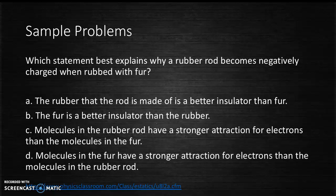For the second problem: which statement best explains why a rubber rod becomes negatively charged when rubbed with fur? The answer is D: molecules in the fur have a stronger attraction for electrons than the molecules in the rubber rod. This has to do with electron affinity. Answers A and B might have been tempting, but they deal with conductivity and not electron affinity.